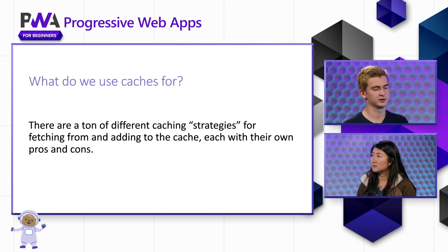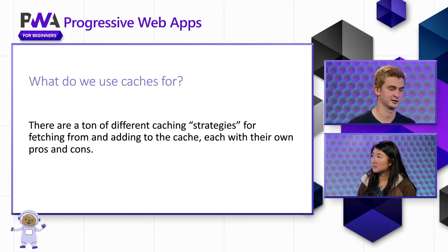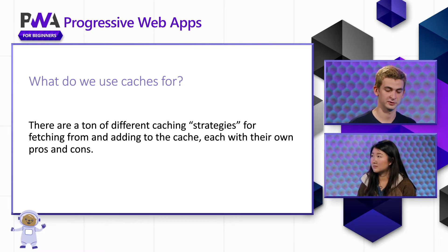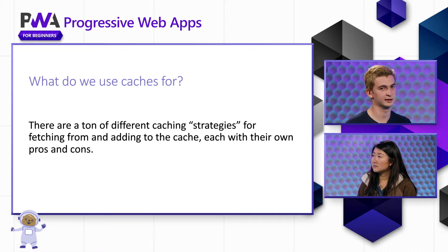So what do we actually use cache for? In the context of progressive web apps, we can think of caches as our offline backup — a place where we can fetch content from when the network is not available. In the last video, we mentioned the fetch event, and it's often when we handle this event that we actually make use of our caches.